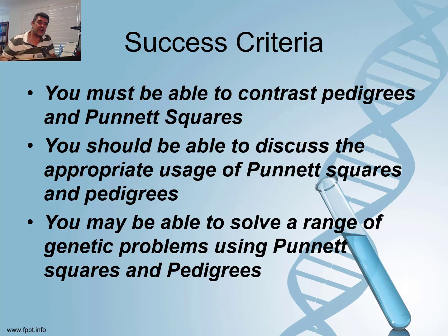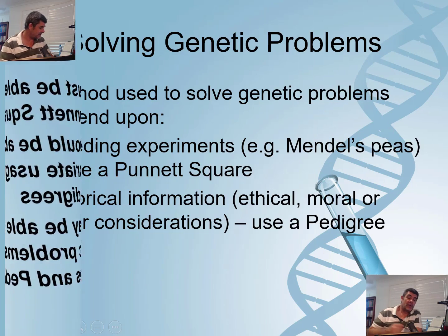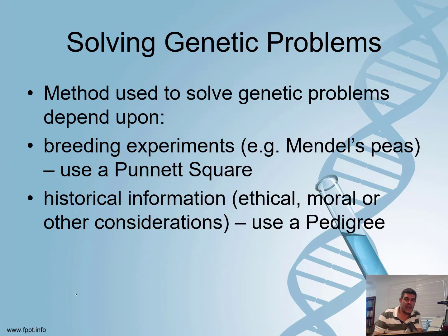I've included Punnett Squares here, but I'm not going to put a lot of emphasis on them because we've already been talking through them — both in class and in these videos and the PowerPoints — so you've had some experience with Punnett Squares, but we haven't looked at pedigrees. I'll give a brief overview of Punnett Squares so we can contrast when we use those versus pedigrees. The main thing I want you to be able to do is solve a range of genetic problems using both tools.